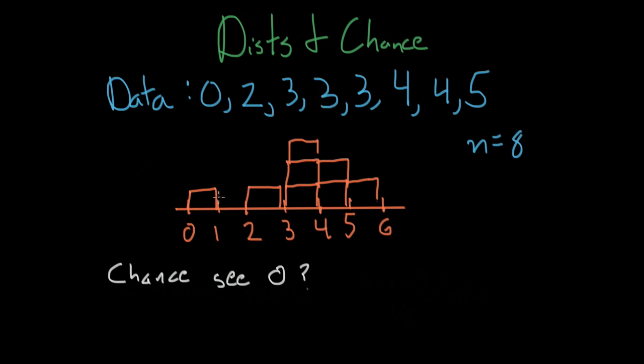But an easier way to do it, since we actually have the histogram here, is take the area at zero and divide by the total area. So in this case, if each of these blocks had area one, then it would be one divided by eight, which is the exact same as counting the number of times zero occurs, one, divided by the total number of times anything occurs, eight.